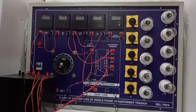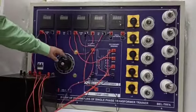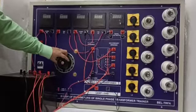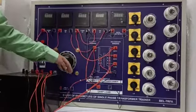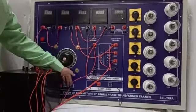So first of all, this is a single-phase variac. It works from 0 to 4 ampere and 220 volt output. So the variable output voltage is coming here.